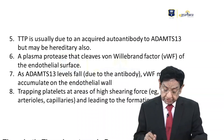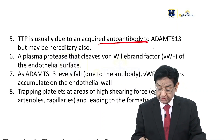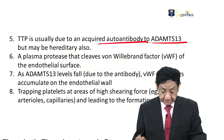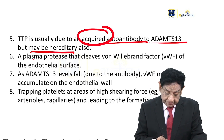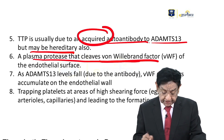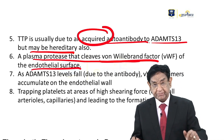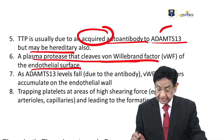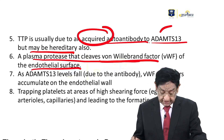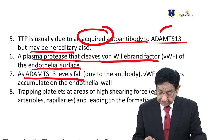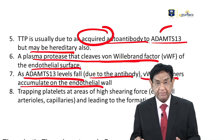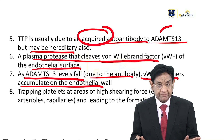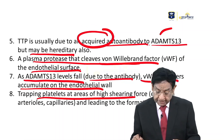TTP is usually due to acquired autoantibodies to ADAMTS-13, but it may be hereditary — usually it is acquired. ADAMTS-13 is a plasma protease that cleaves von Willebrand factor off the endothelial surface. If its level falls due to antibodies, von Willebrand factor accumulates in the endothelial wall — it is not removed. That leads to trapping of platelets under high shearing force and leads to formation of microthrombi.